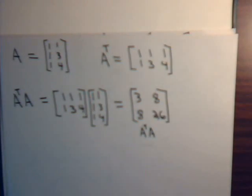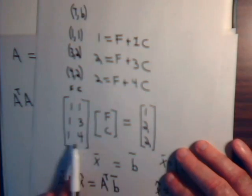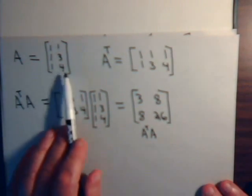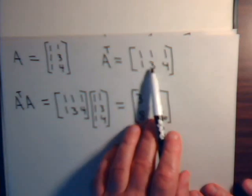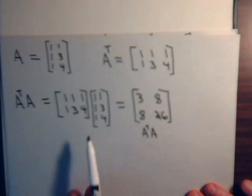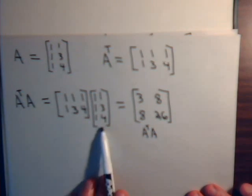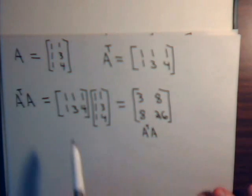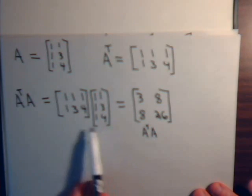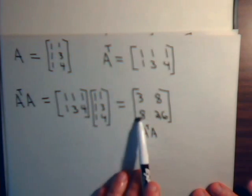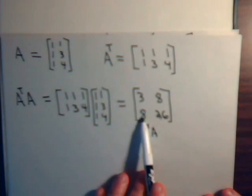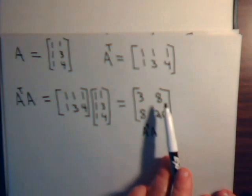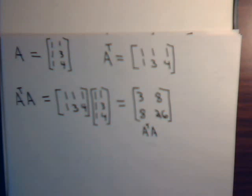Matrix A is [[1,1],[1,3],[1,4]], so A-transpose is [[1,1,1],[1,3,4]]. We compute A-transpose times A: going over and down we get 1+1+1=3; then 1+3+4=8; again 8; and 1+9+16=26. So A-transpose times A equals [[3,8],[8,26]]. Notice it is symmetric, just as we noted in our earlier videos.